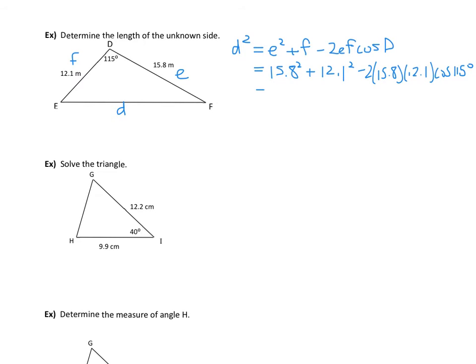Putting that all in the calculator in one big calculation: 15.8 squared plus 12.1 squared minus 2 times 15.8 times 12.1 times cosine of 115. I get approximately 557.64.